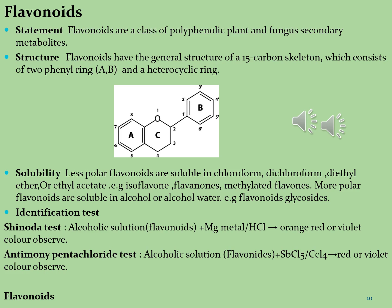Flavonoids are soluble in less polar solvents, high polar solvents, and combinations of organic and water solvents. The less soluble fractions include isoflavones, flavanones, and methylated flavones, which are soluble in chloroform, dichloromethane, diethyl ether, and ethyl acetate.